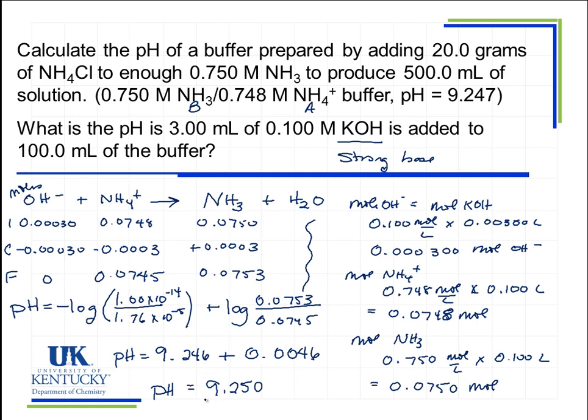So the pH is now 9.250. The pH of the buffer originally, before I added this base, was 9.247. So it rose ever so slightly to 9.250. We would expect to see a slight elevation as we add a base, but again, it is a buffer, so it's resisting change to pH.